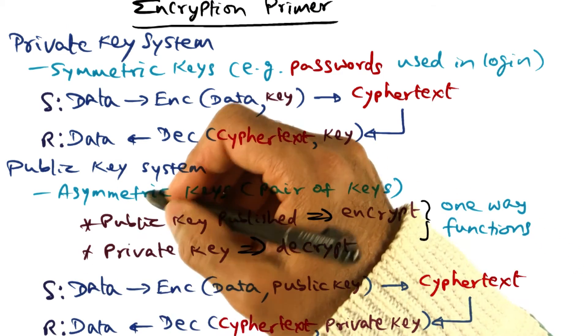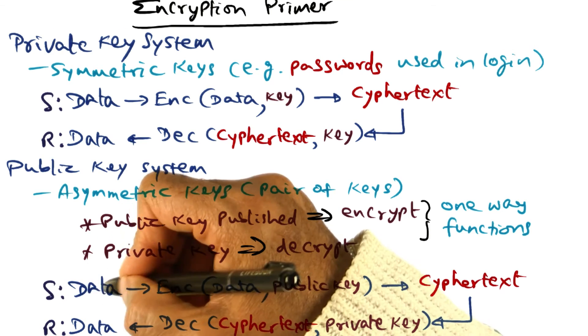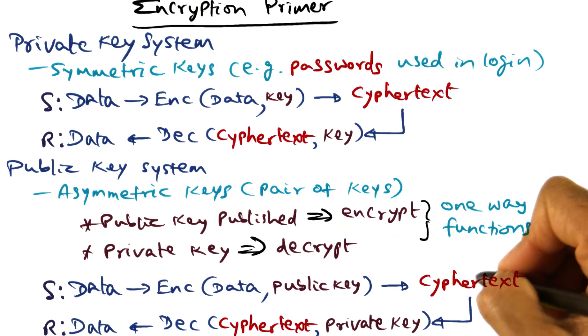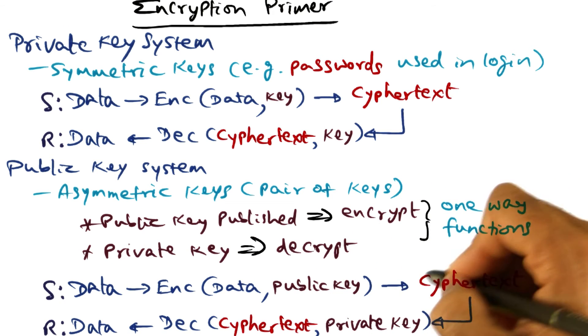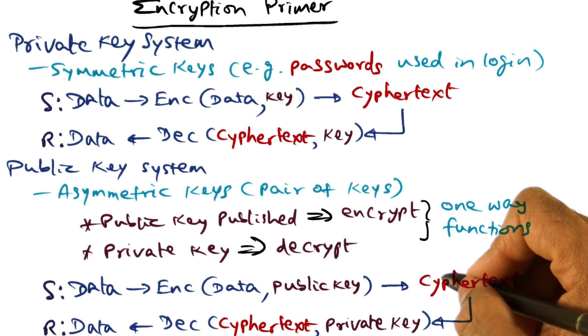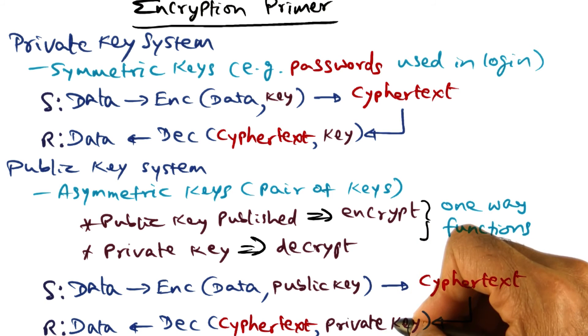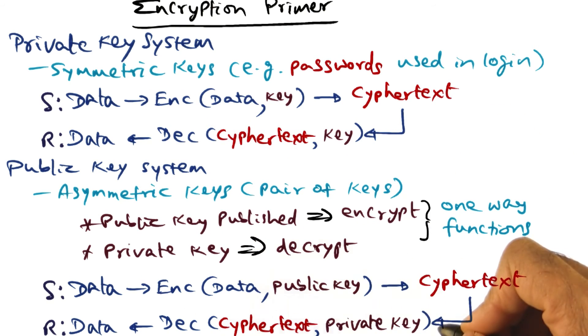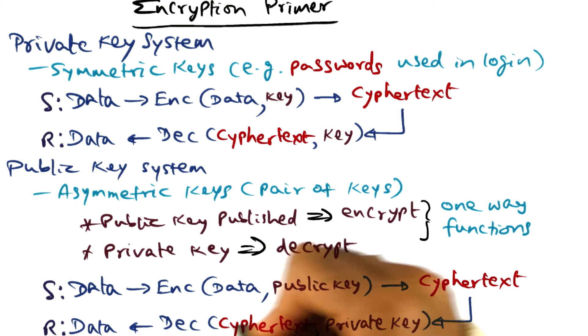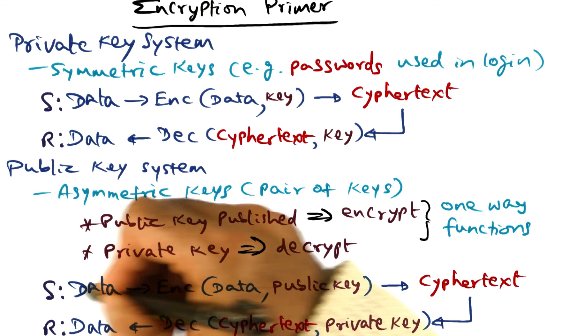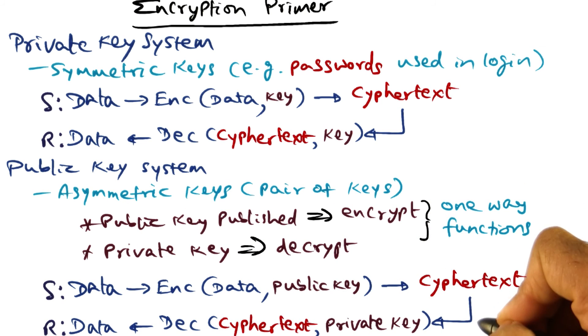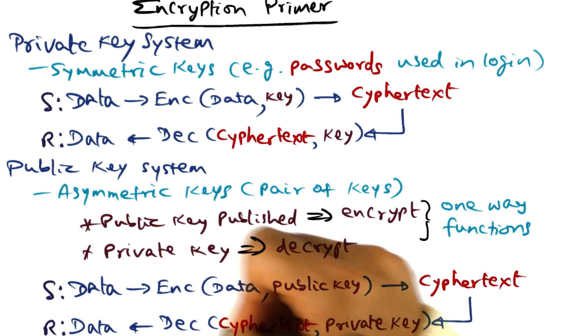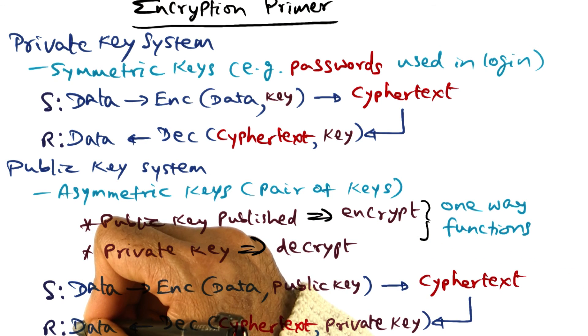So now, the way you would send data, if you're the sender, take the data, encrypt it using the public key. You create a ciphertext. Once you have the ciphertext, you cannot convert it back to the data using the public key. The only entity that can convert the ciphertext back to its original data is the entity that has the private key, the other part of this asymmetric key infrastructure. And using the private key, you can decrypt the ciphertext and create the original data. So this is the workflow for a sender to encrypt the data, create a ciphertext, send it to the receiver. Receiver decrypts it using the private key and produces the original data.